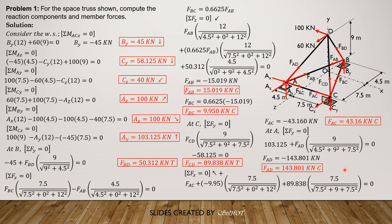We ran out of space to show it here, but I want you to check the equilibrium of joint D to verify all answers are correct. Perform summation of forces along X — it should be 0; summation of forces along Y — it should be 0 or almost 0; and summation of forces along Z must also be almost 0.